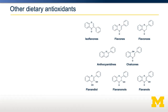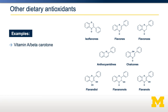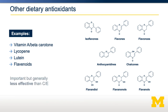There are several other dietary antioxidants — for example, vitamin A, lycopene, lutein, and flavonoids. These all play slightly different roles and have slightly different specificities and locations in the cell, but they're generally present at much lower levels and as such are less important than vitamin C and vitamin E.